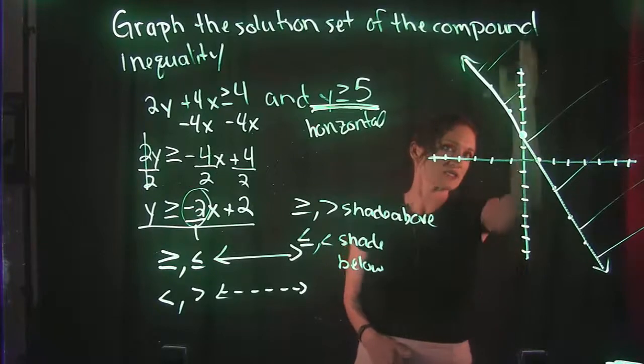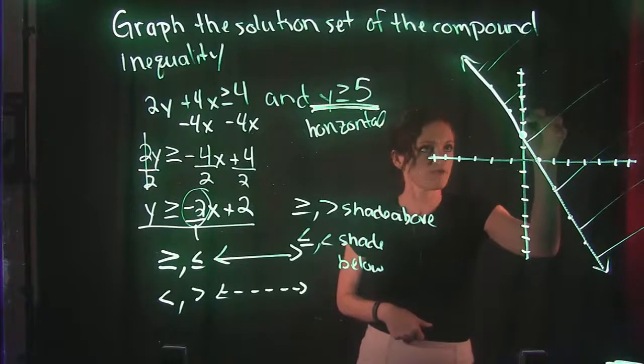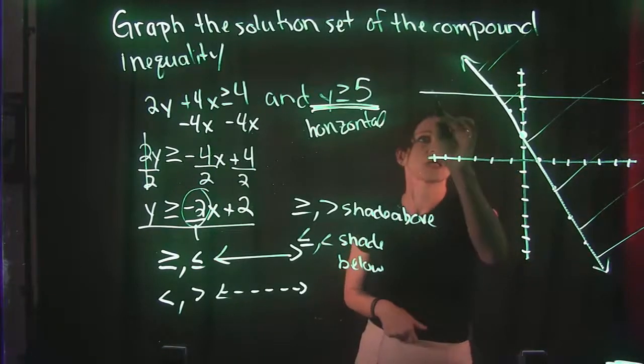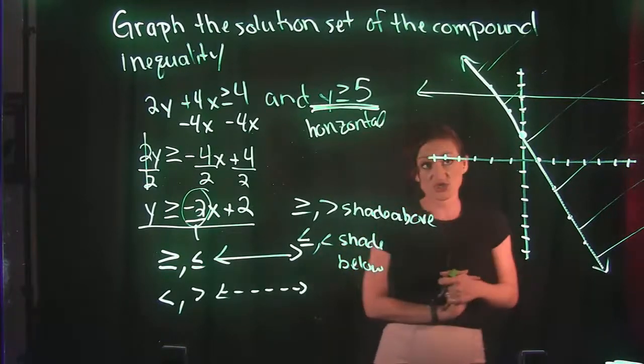So our y-axis is this one right over here that goes up and down. And a positive 5 is 1, 2, 3, 4, 5 right over here. So we would draw a horizontal line at positive 5. And this one also says to shade above. So shading above that line is everything over here.